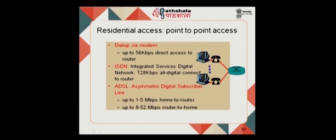Another option is ISDN — Integrated Services Digital Network — which provides a 128 kilobits per second all-digital connection to the router, unlike the analog modem connection where modulation converts digital data to analog signals. A more popular option today is ADSL — Asymmetric Digital Subscriber Line — providing 1 to 5 Mbps from home to router (uplink) and 8 to 52 Mbps from router to home (downlink), hence the name asymmetric.